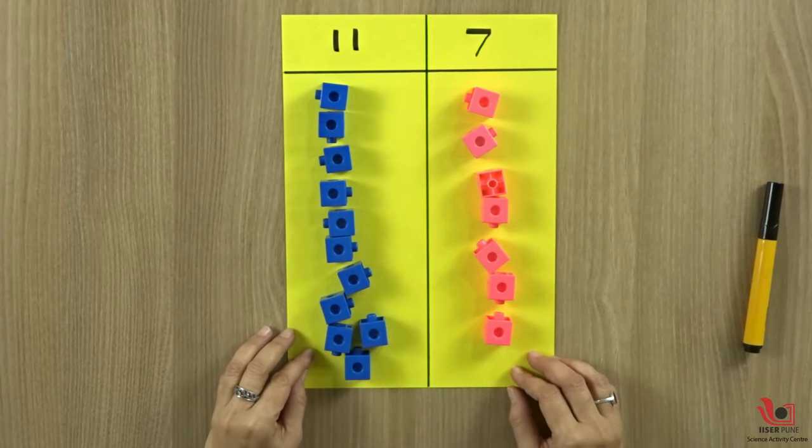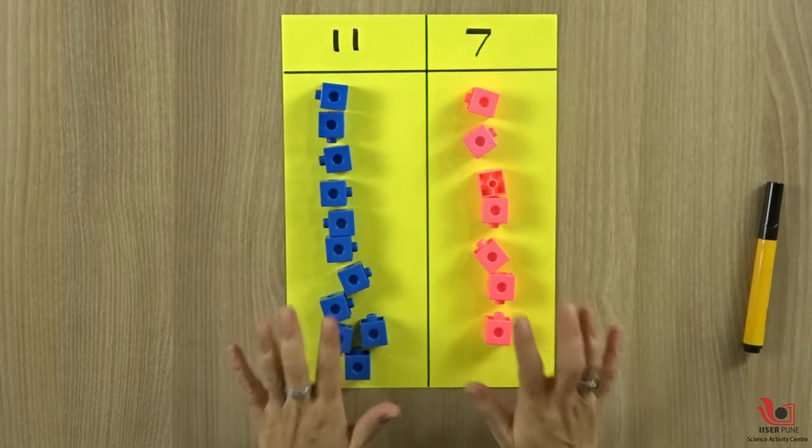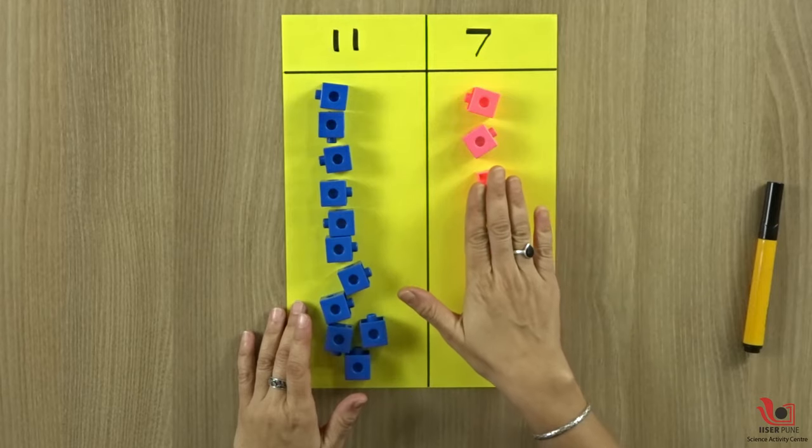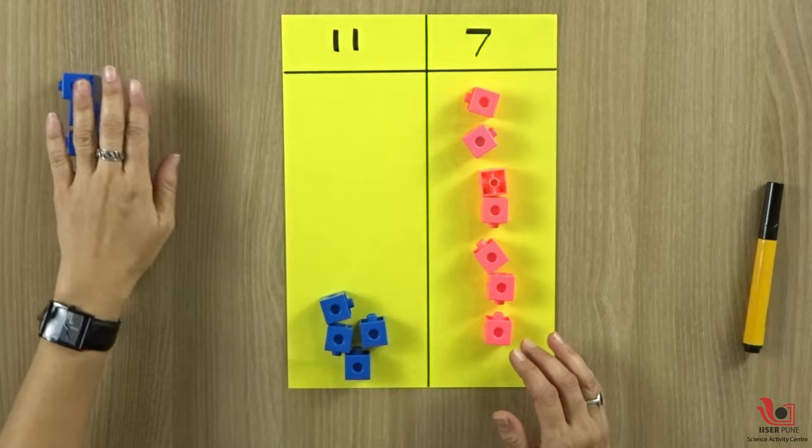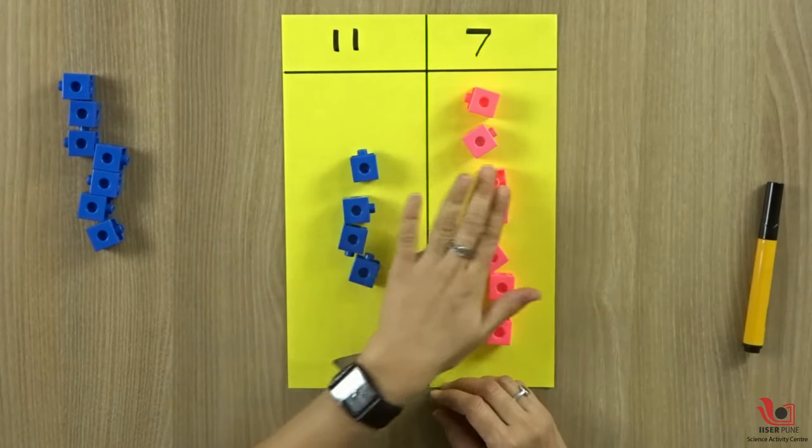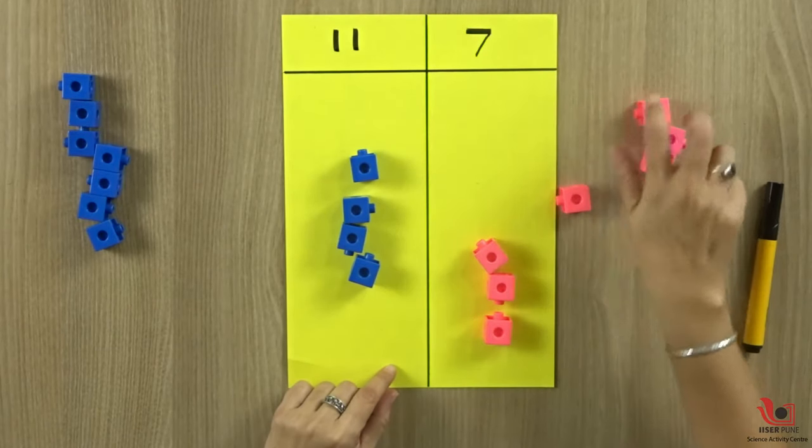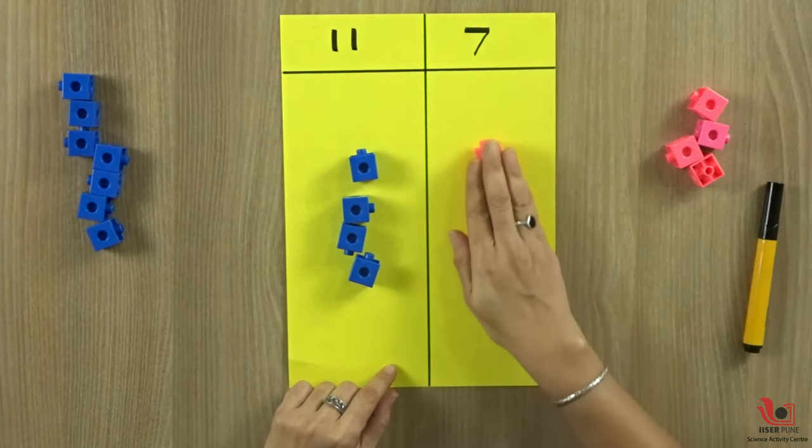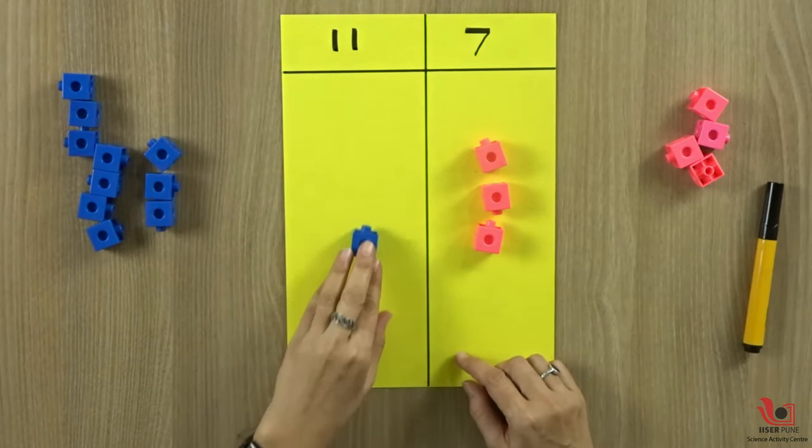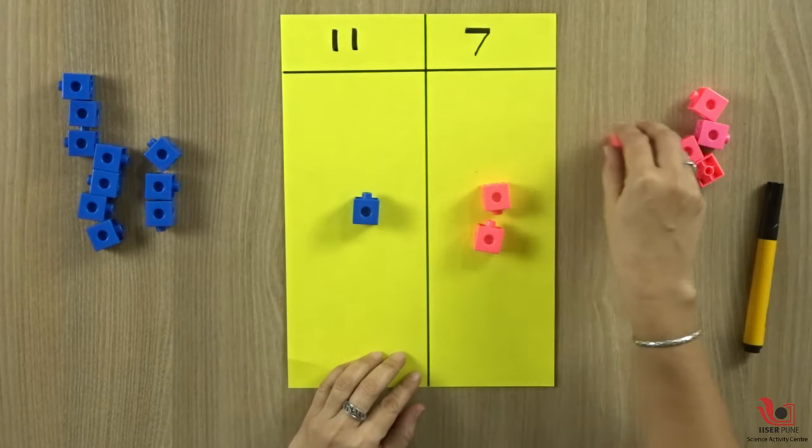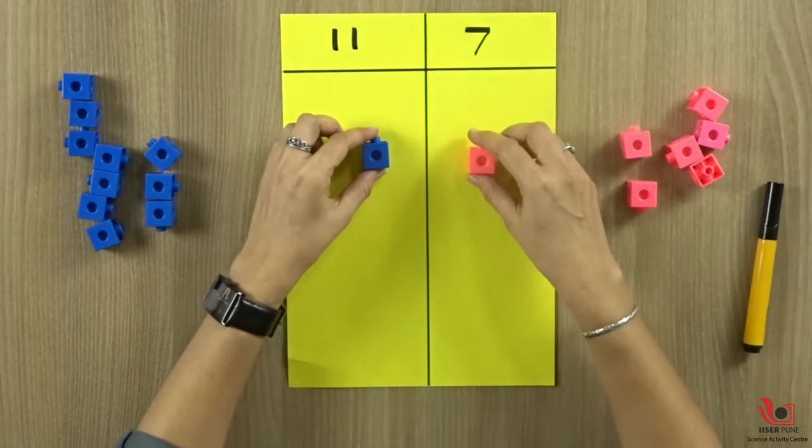We will arrange 11 blocks here. Now we will eliminate the smaller number from the greater number till we get equal blocks on both sides. This number is 7, so we will eliminate 7 blocks from this side. Now the numbers are 4 and 7. This is the smaller number, so we eliminate the smaller number from the greater number. Now this is the smaller number, 3. We eliminate 3 from here. Now 1 is left. We eliminate 1 from here. Still we need to eliminate 1 more. And now 2 blocks are left.